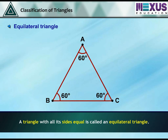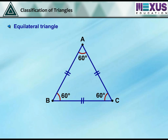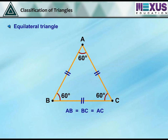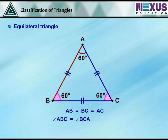Equilateral triangle: a triangle with all its sides equal is called an equilateral triangle. In the given figure, ABC is an equilateral triangle as side AB is equal to side BC. In an equilateral triangle, all three angles are also equal — that is, angle ABC equals angle BCA equals angle CAB. Also, each angle is equal to 60 degrees.